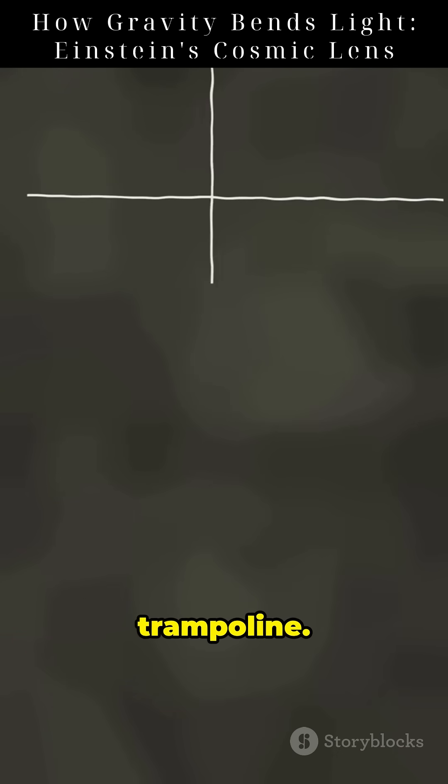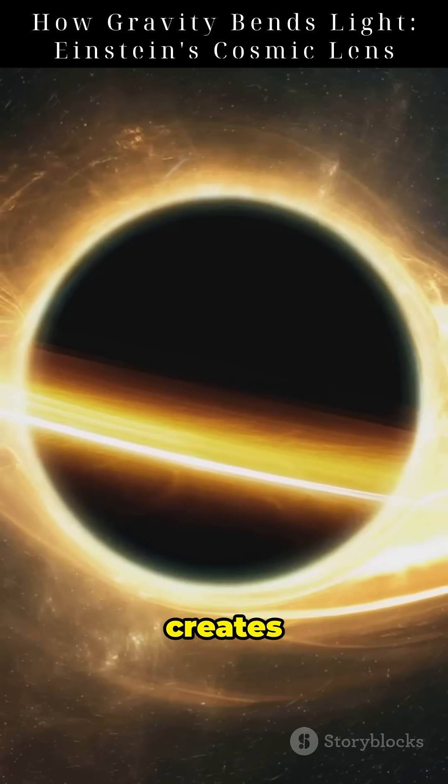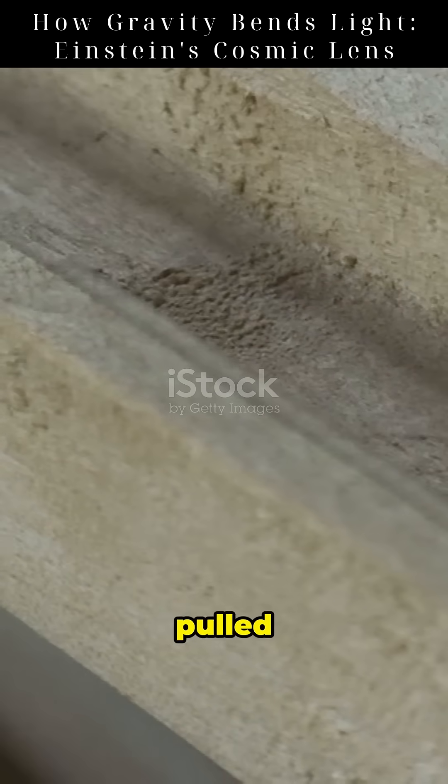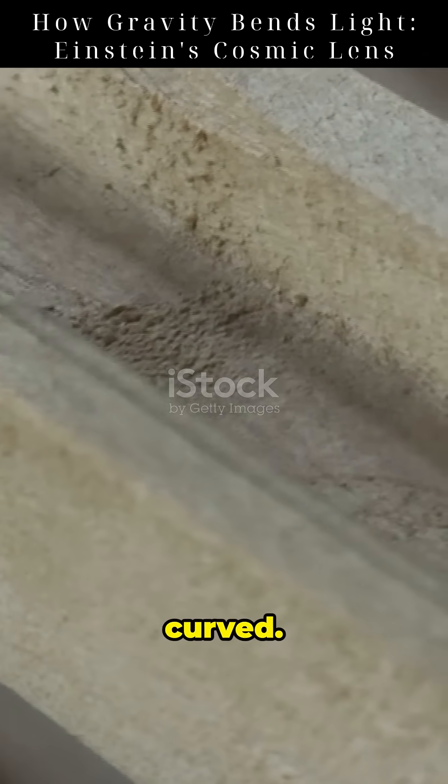Imagine space like a trampoline. A bowling ball like the sun creates a dent. Smaller objects roll toward it, not because they're pulled, but because space itself is curved.